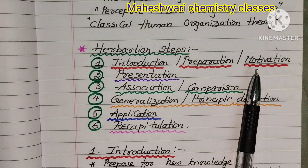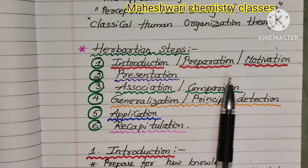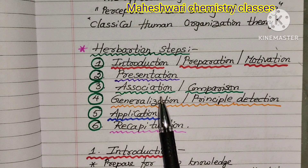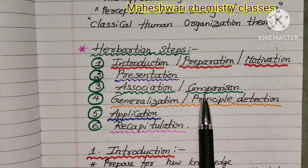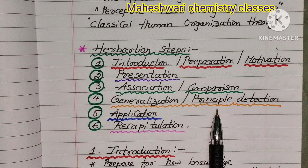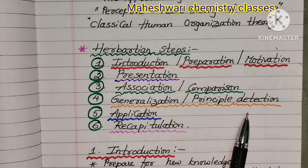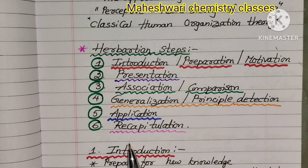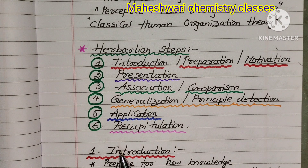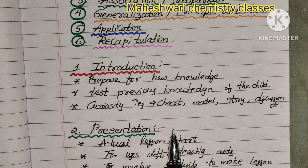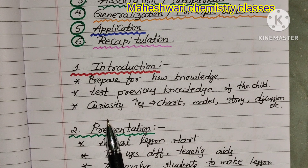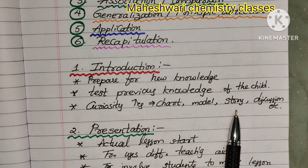The first step is Introduction, which includes preparation and motivation. In the introduction, the teacher prepares students for new knowledge, tests previous knowledge of the child, and increases curiosity. This is done based on charts, models, stories, discussions, etc.